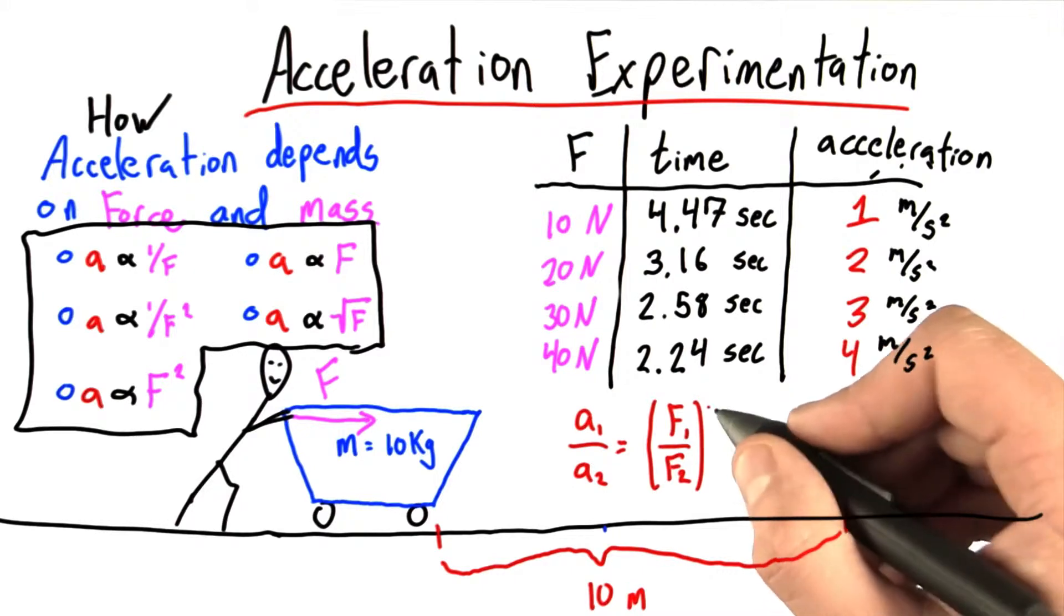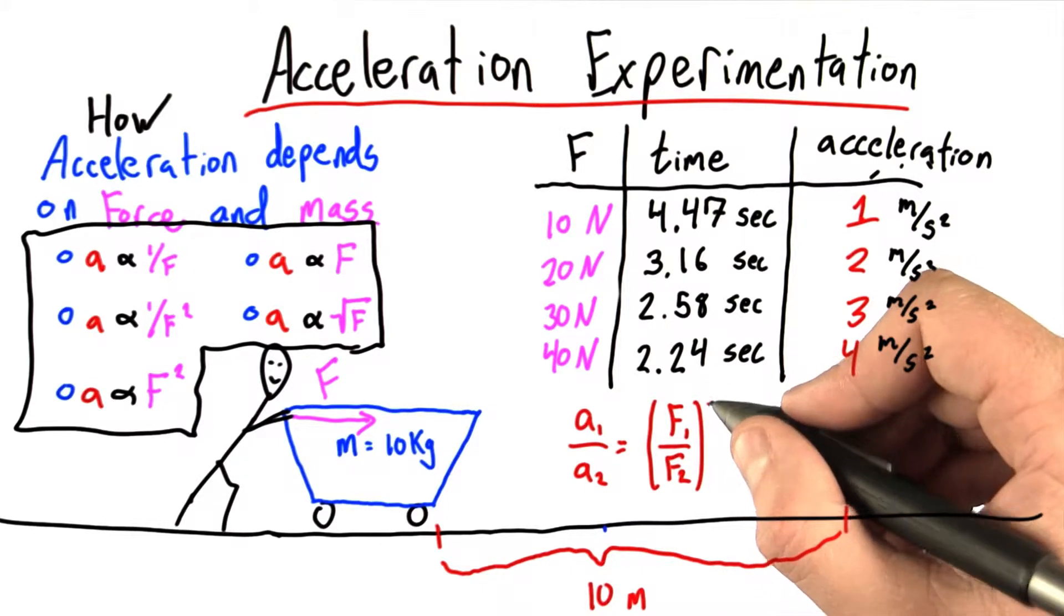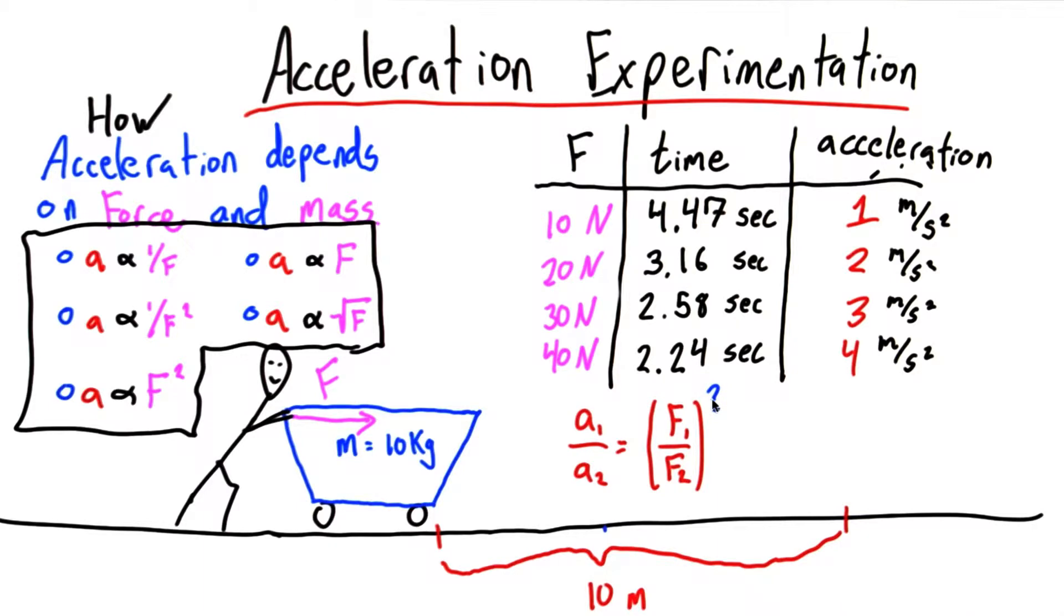And we realize that sometimes this ratio needs an exponent. Maybe that exponent is 1 or 2 or negative 1 or negative 2. Let's see what exponent we need here.